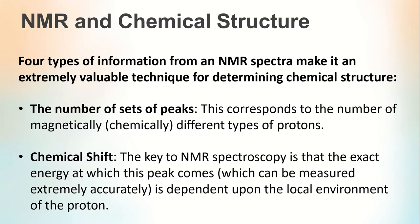NMR and chemical structure. There are four types of information from an NMR spectrum that make it an extremely valuable technique for determining chemical structure. The first of four is the number of sets of peaks, which corresponds to the number of magnetically or chemically different types of protons. The second valuable piece of information is the chemical shift.